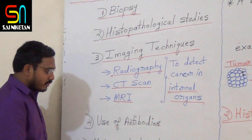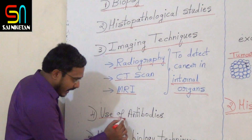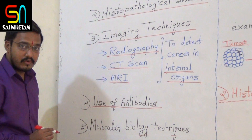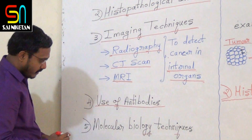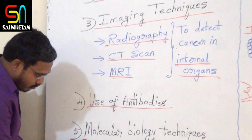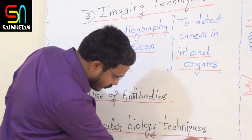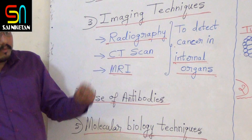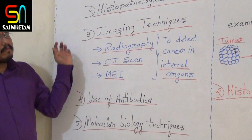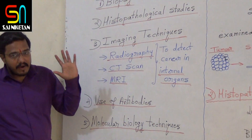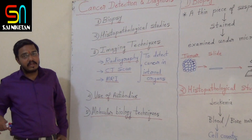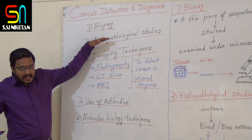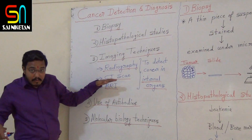The fourth method is use of antibodies — it is possible to detect cancer by using antibodies. The fifth one is molecular biology techniques. So, there are mainly five methods available to detect cancers. Let us see these five methods one by one.